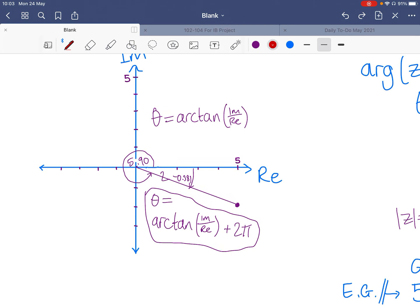So in the third quadrant, you're going to do arctan of the normal thing plus π.